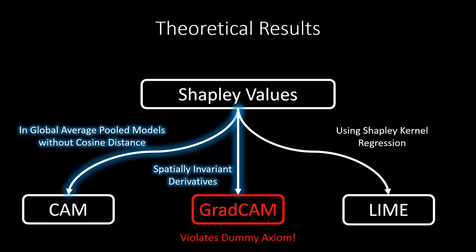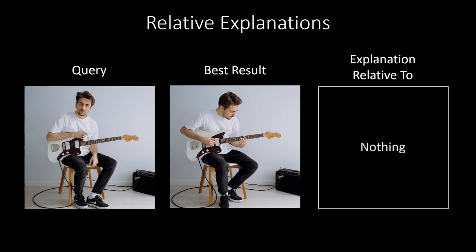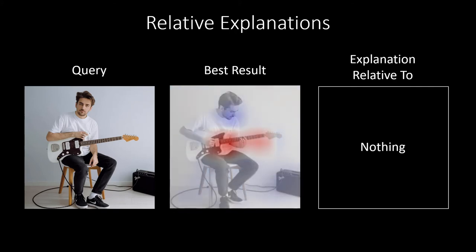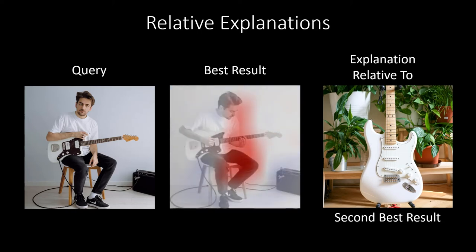Additionally, we found that methods like CAM and GRAD-CAM were missing key terms that allow one to perform relative and counterfactual explanations. In this example, a query and a best result are matched, and the standard explanation that CAM and GRAD-CAM gives highlights the guitar as the most salient reason. With these new terms, we can instead explain relative to a second-best result, and one can see that this explanation highlights instead the tie-breaking elements, namely the shared person between the two queries.